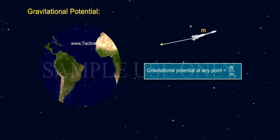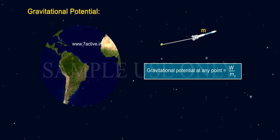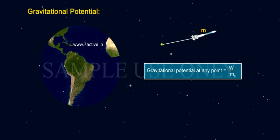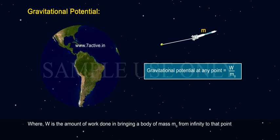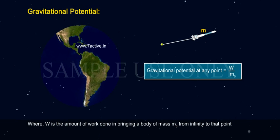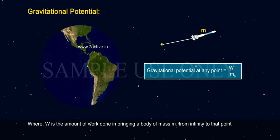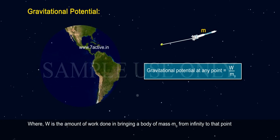Therefore, gravitational potential at any point equals W by M₀, where W is the amount of work done in bringing a body of mass M₀ from infinity to that point.